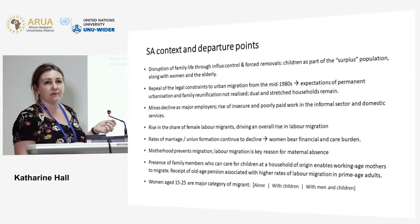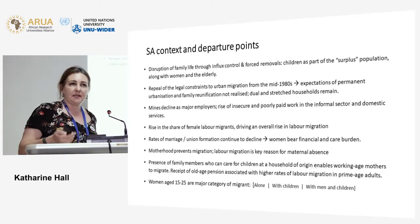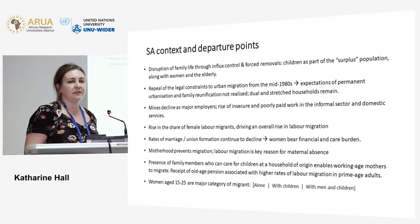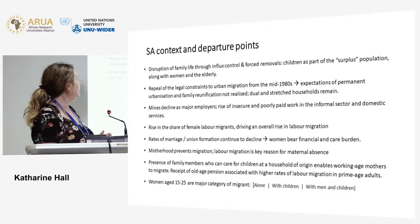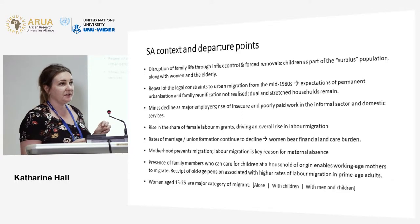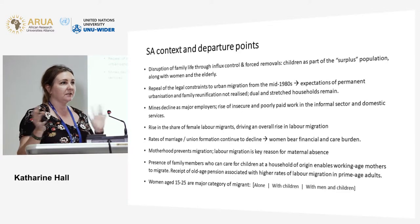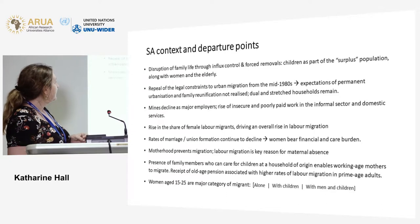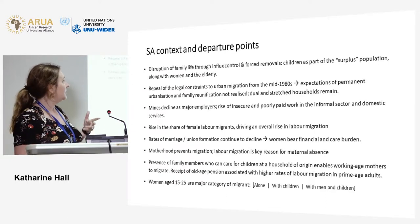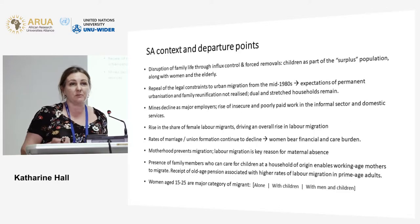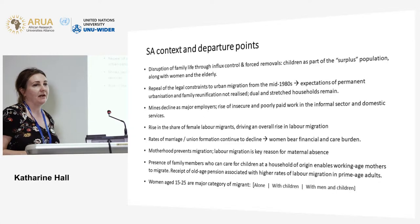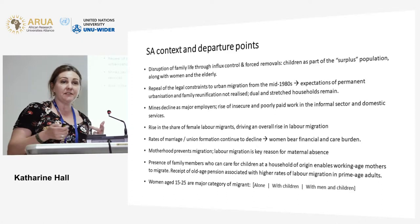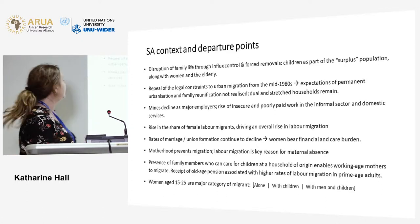The repeal of these legal constraints only from the mid-1980s meant there was a sudden expectation that you would see massive permanent family migration, but studies have suggested this has not happened. Mines declined as major employers — those were the major migrant employers that set up single-sex hostels not conducive to family living. In place of this rose more insecure and poorly paid work in the informal sector and domestic work, and alongside this we've seen a rising share of female migration as a share of labor migrants. This is important for children because these are prime-age women of childbearing age.